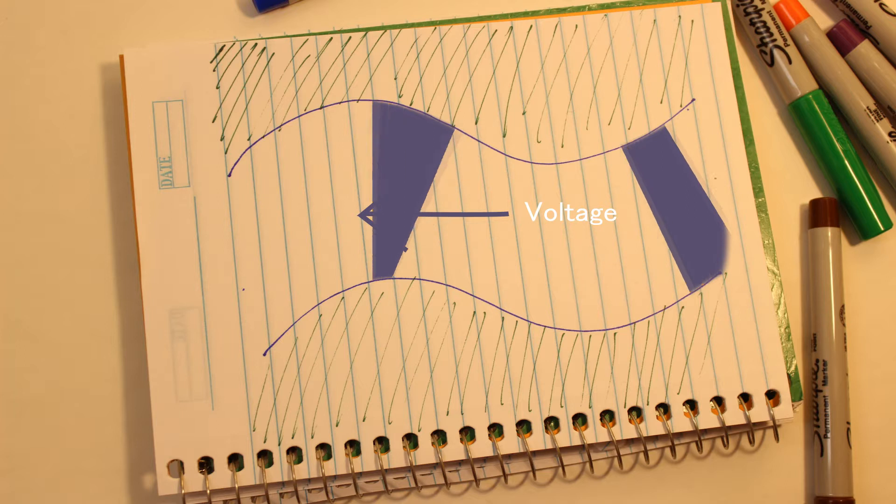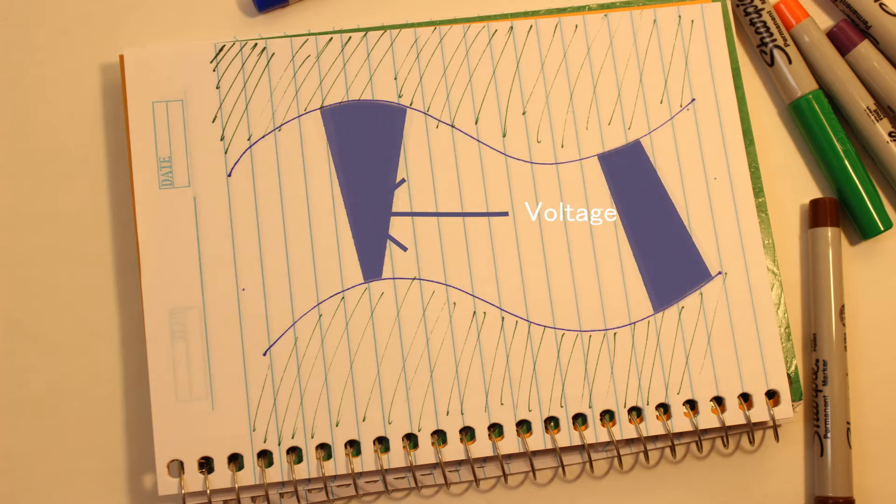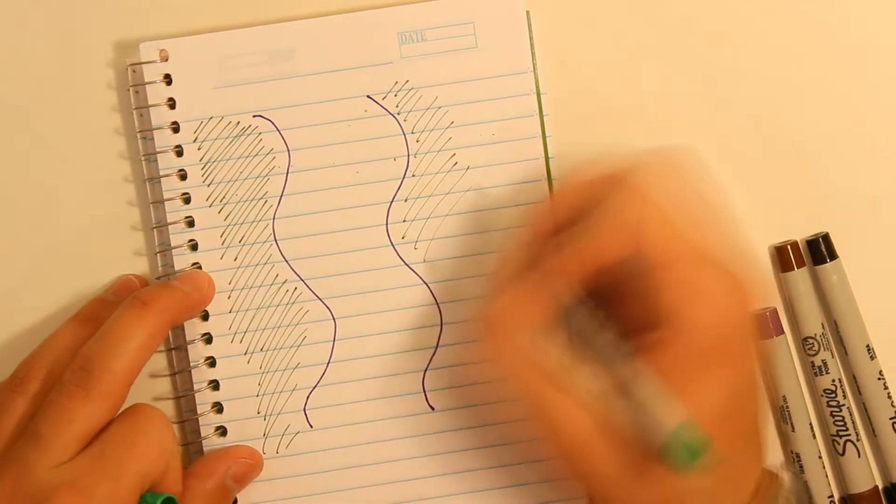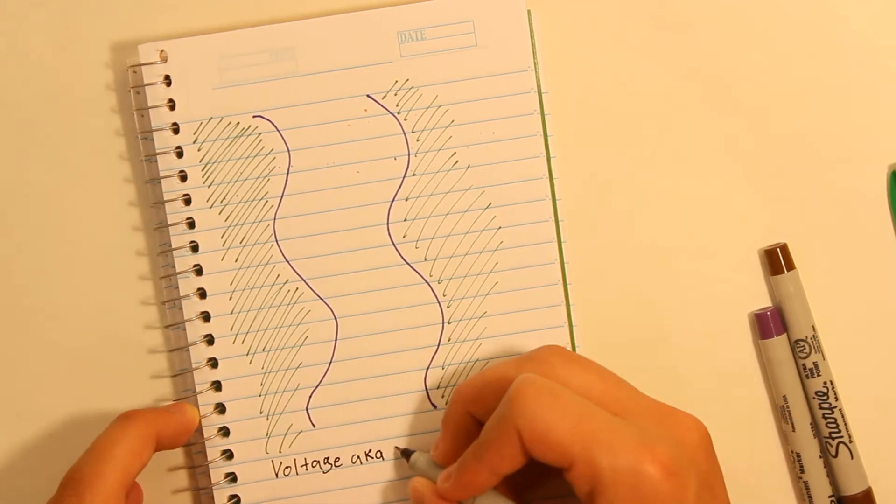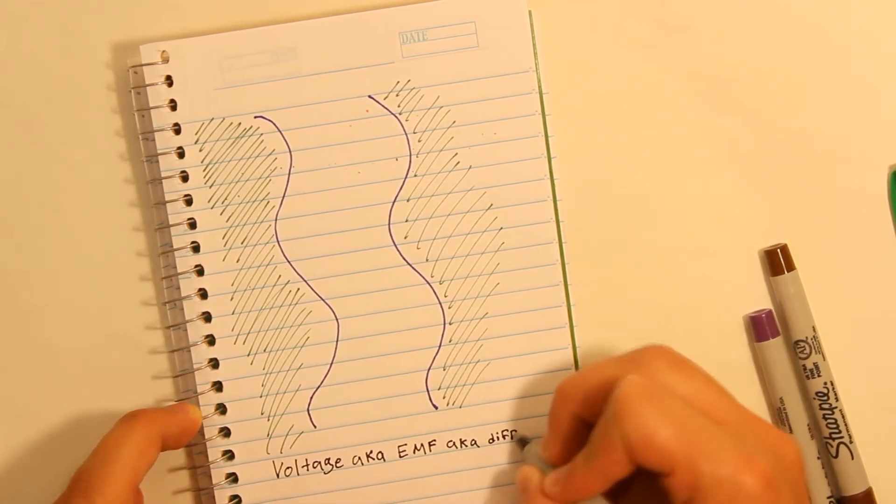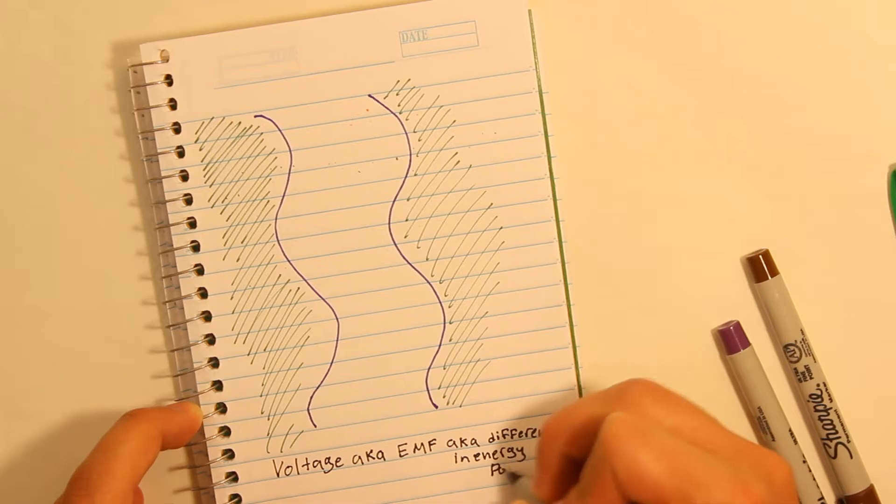In electrical terms, voltage is what actually moves electrons through a conductor. Voltage is also known as electromotive force, or EMF. It is a difference in energy potential which causes a net flow of electrons.